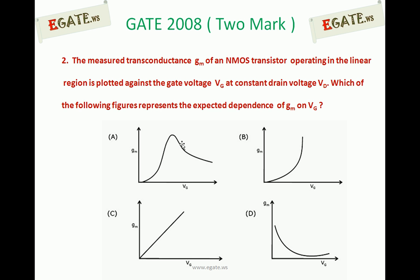The measured transconductance gm of an NMOS transistor operating in the linear region is plotted against the gate voltage Vg at constant drain voltage Vd. Which of the following figures represents the expected dependence of gm on Vg?